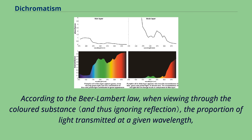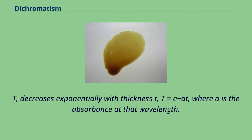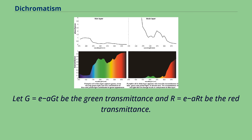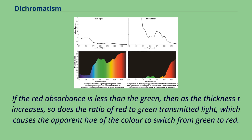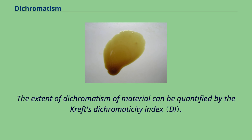According to the Beer-Lambert law, when viewing through a colored substance, the proportion of light transmitted at a given wavelength T decreases exponentially with thickness t: T equals e to the power of minus A, where A is the absorbance at that wavelength. Let G equal e to the minus A_G times t be the green transmittance and R equal e to the minus A_R times t be the red transmittance. The ratio of the two transmitted intensities is then R/G. If the red absorbance is less than the green, then as the thickness t increases, so does the ratio of red to green transmitted light, which causes the apparent hue to switch from green to red.